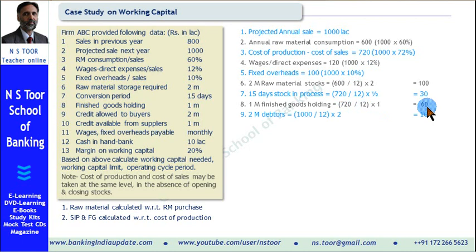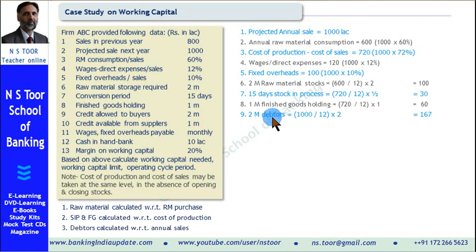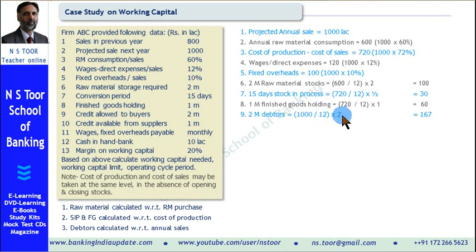Then the amount of debtors — meaning credit allowed to buyers of our products. 2 months credit will be provided, so 2 months of debtors. Calculation of debtors will be with reference to annual sales. Annual sale is 1000 lakh. 1000 lakh divided by 12 gives monthly sale, multiplied by 2 gives the amount of outstanding debtors.